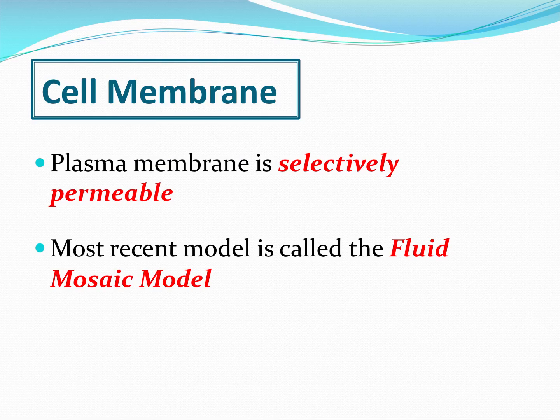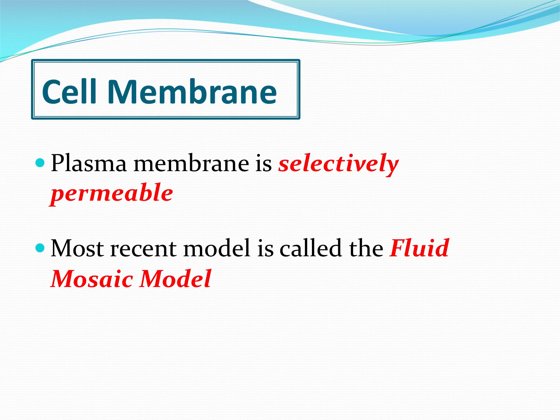First, we're going to describe the membrane as being selectively permeable — sometimes written as semi-permeable. That means it only allows certain things through. Some things go straight across, some things have to go through protein channels, and some things can't get through at all. This allows the cell to control what's going in and out very easily. If the membrane wasn't selectively permeable, things would just be moving back and forth at will, which is not good for the cell.